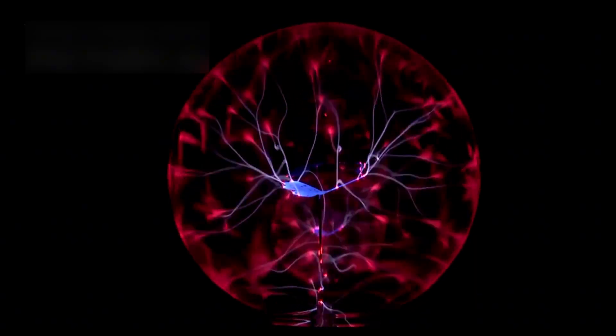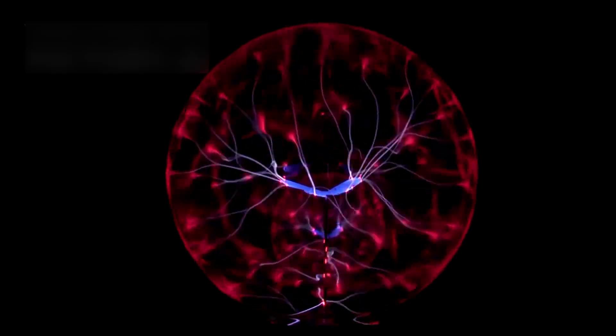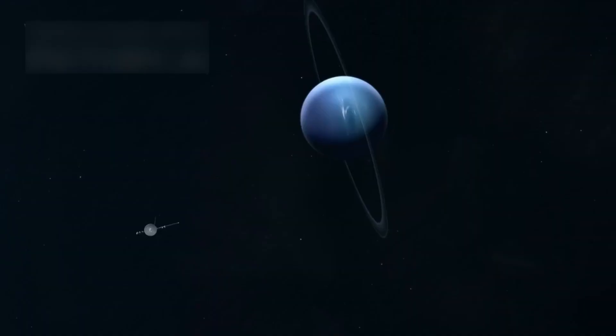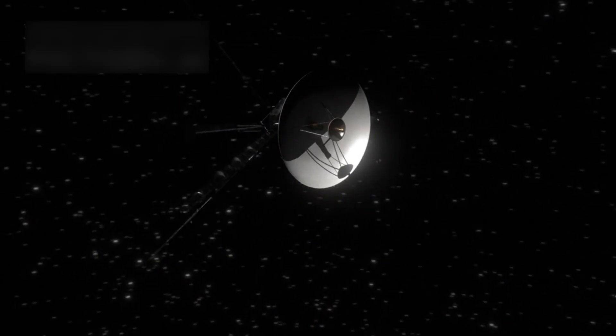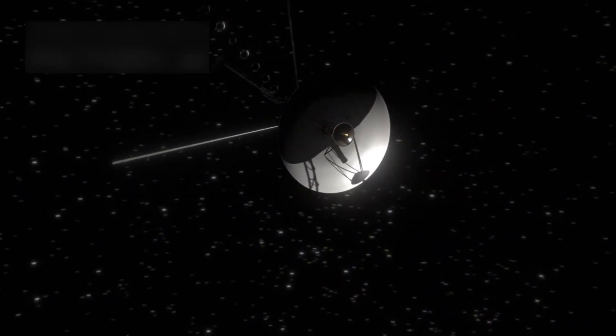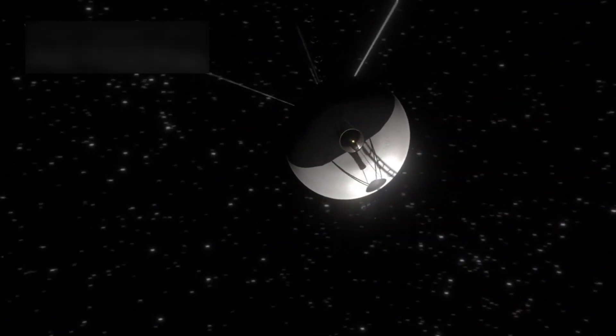From strange plasma behavior to the possibility of alien signals, every detail matters. What lies ahead in Voyager 1's path? Possibly new regions of interstellar space, even denser clouds of particles, or unexplored magnetic zones that could hold answers to age-old questions.